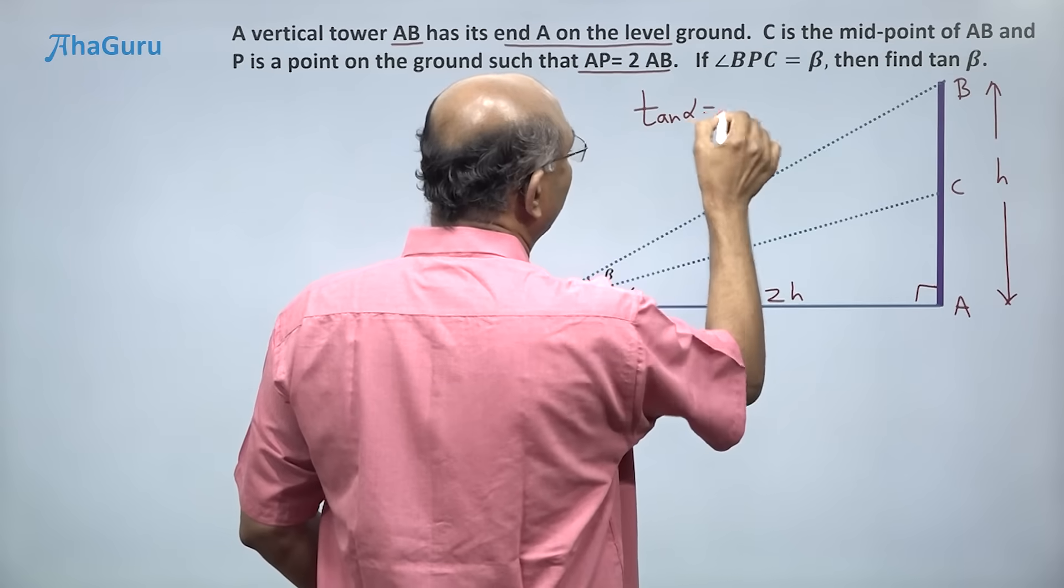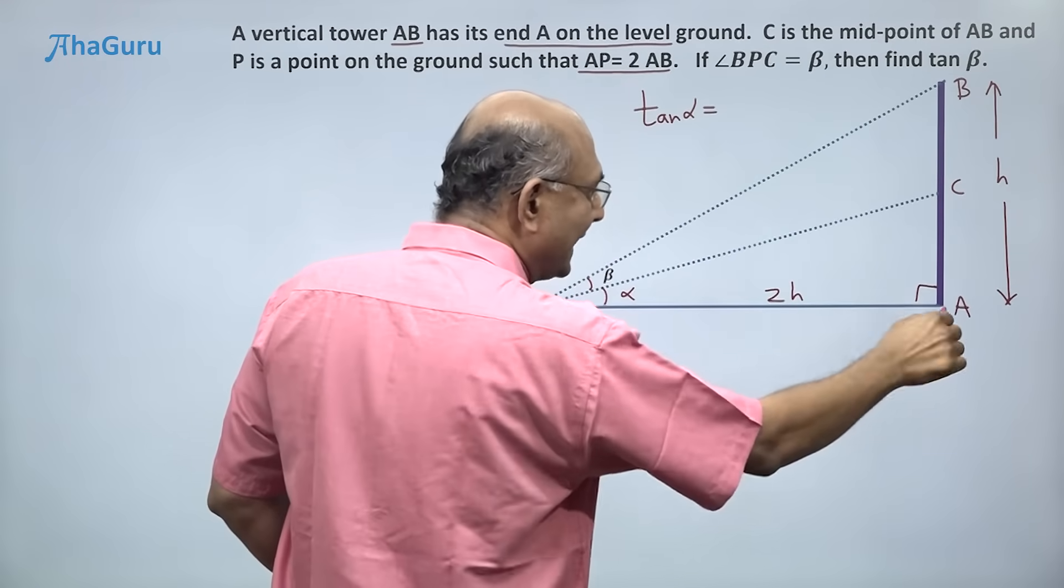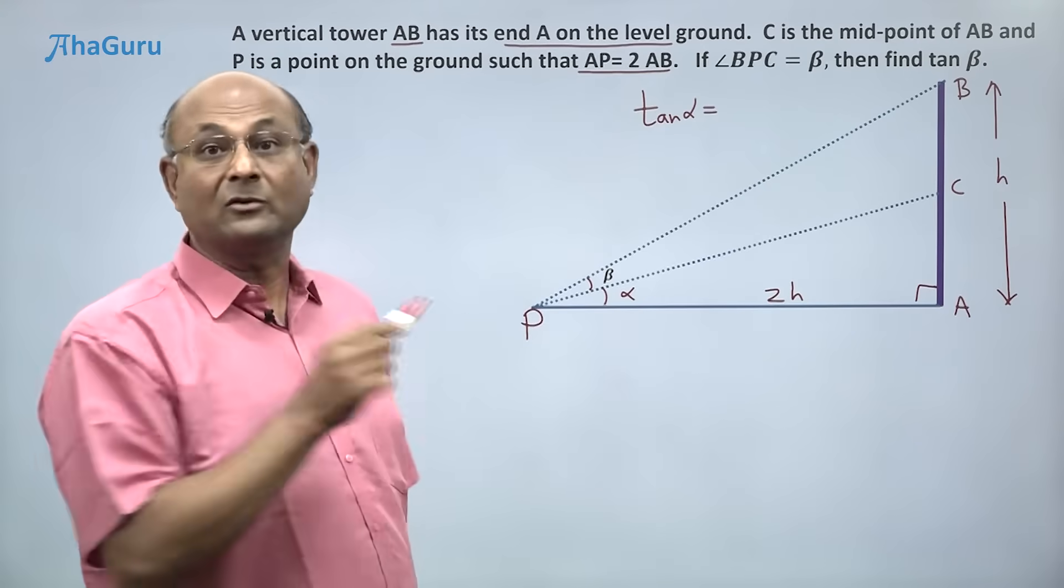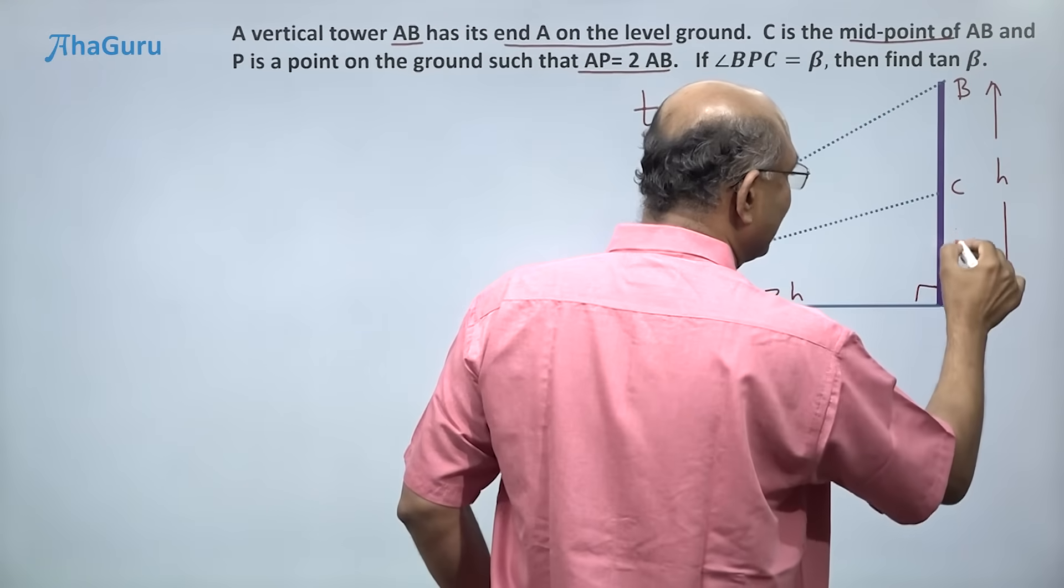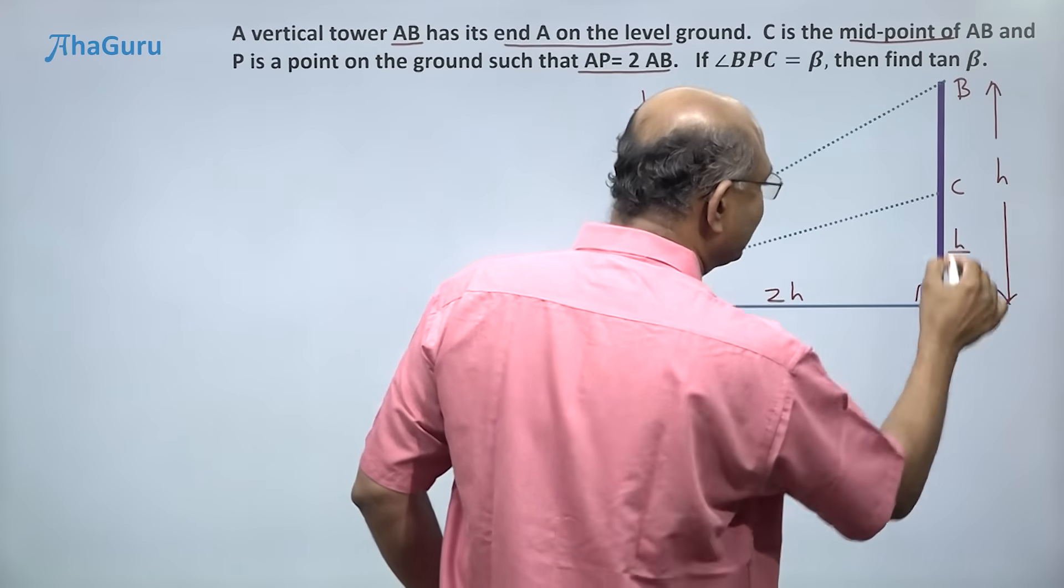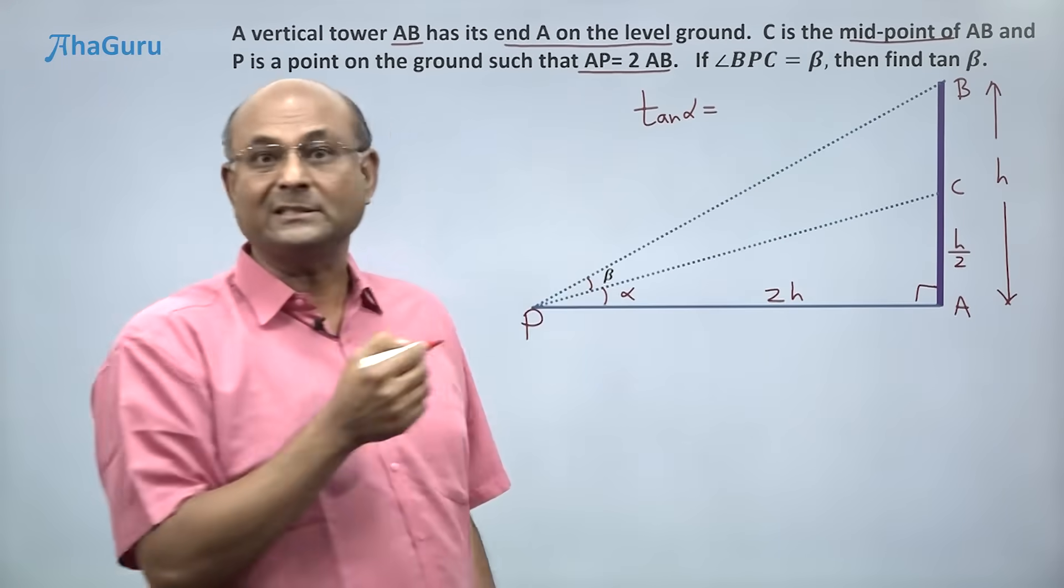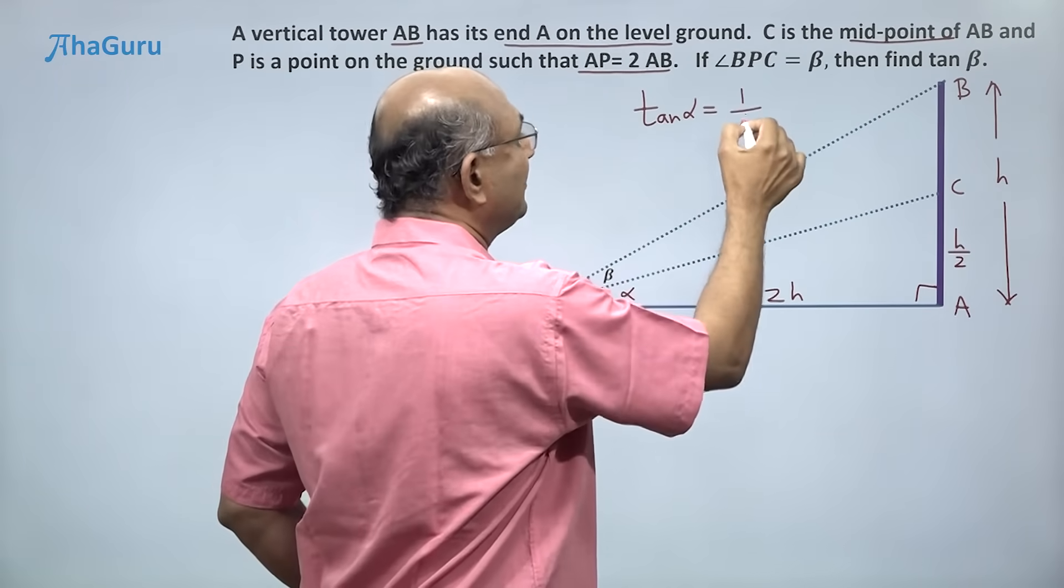Tan alpha is this side divided by this side. Now C, remember, is the midpoint, so that means this is h/2. h/2 divided by 2h is 1/4. So tan alpha, very easy to find: 1/4.